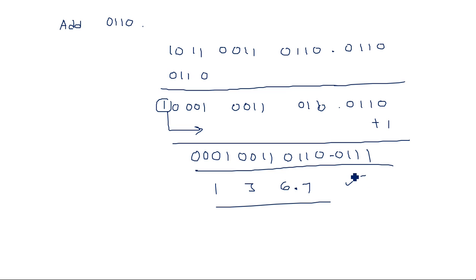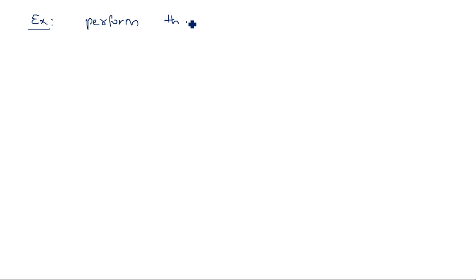This is how nines complement subtraction works. We first convert the negative number into a positive number by taking the nines complement, then add it to the other number. In the result, if any 4-bit group has a value greater than 9, we add 6 to correct it back to a valid BCD number.